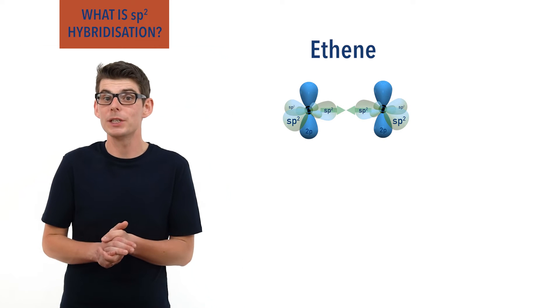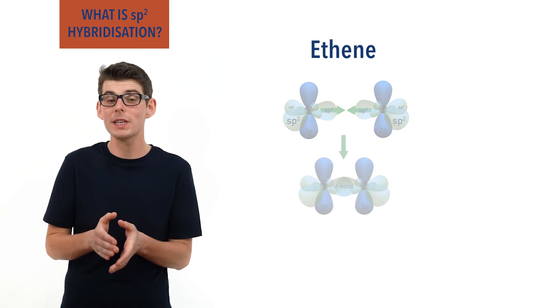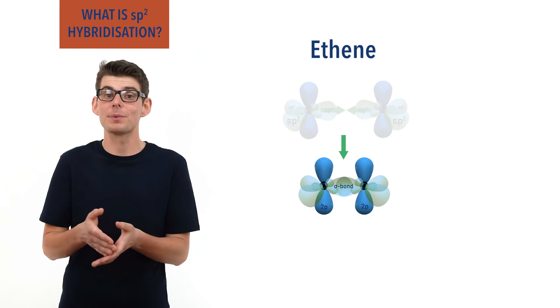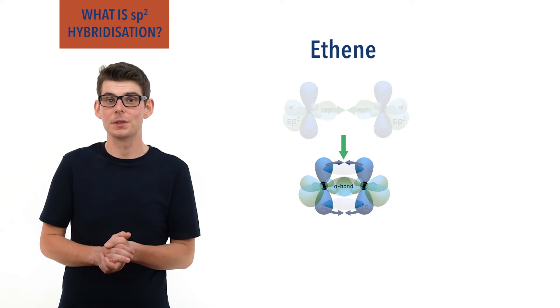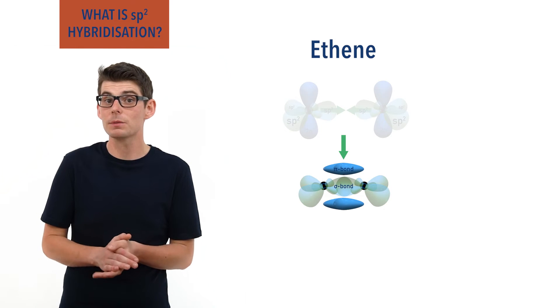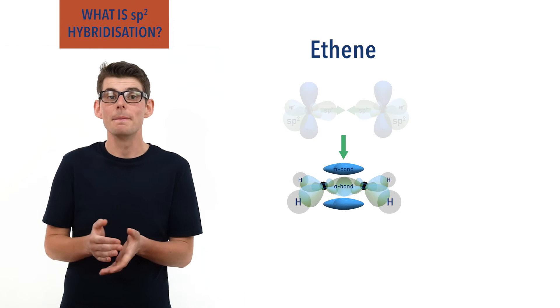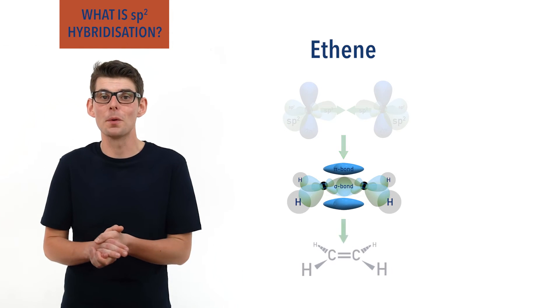Two sp2 hybrid orbitals make up a sigma bond between the carbon atoms and their half-filled p orbitals overlap sideways to form a pi bond. Two hydrogen atoms are sigma bonded with the other sp2 hybrid orbitals on each carbon, making up the C2H4 molecule.